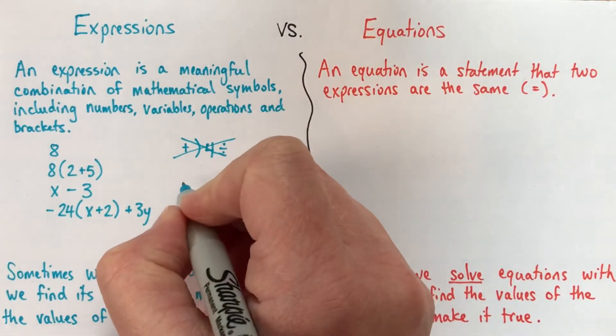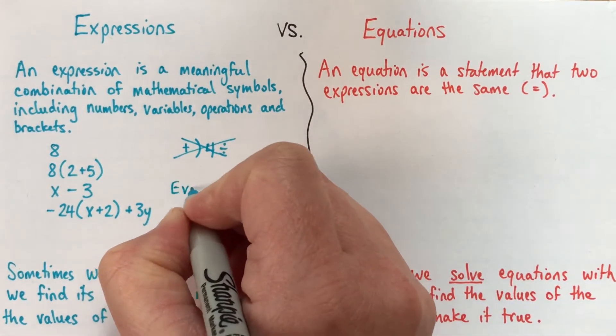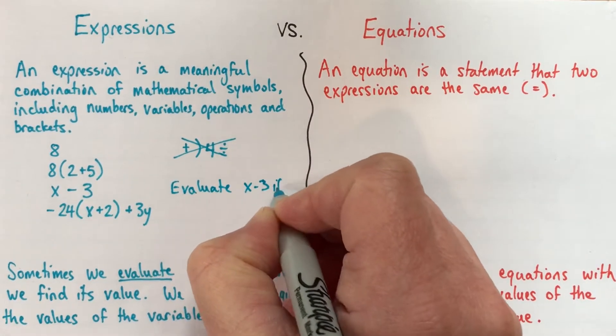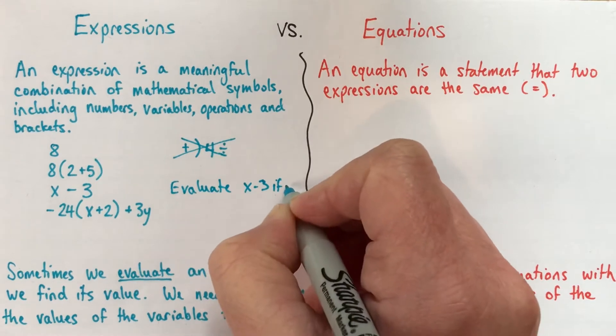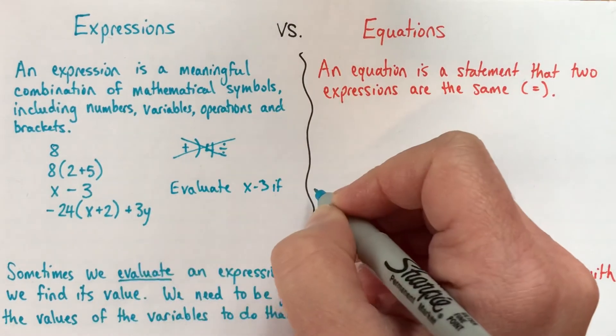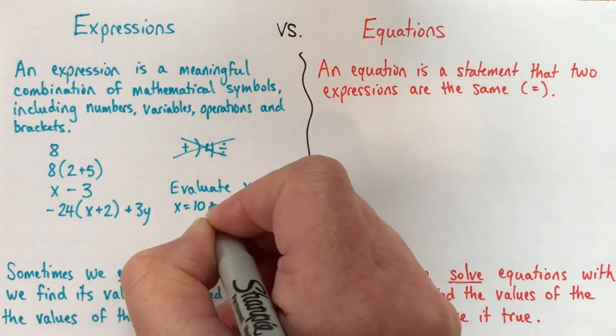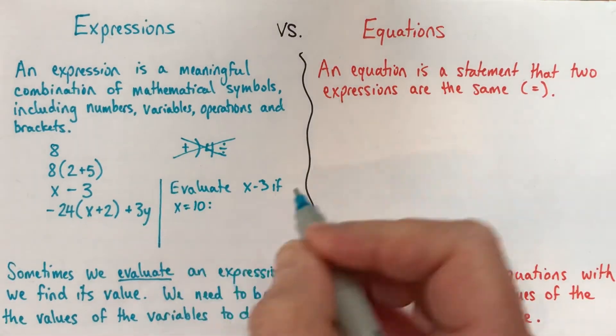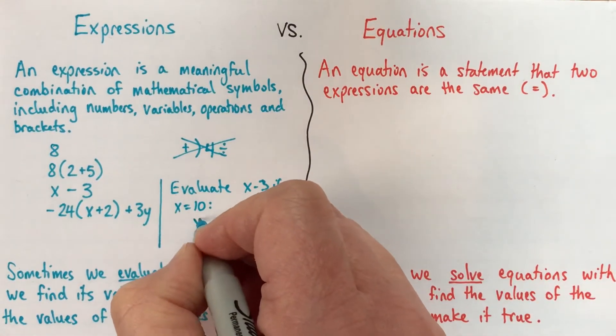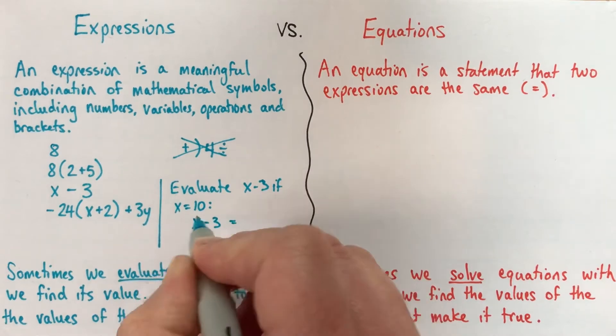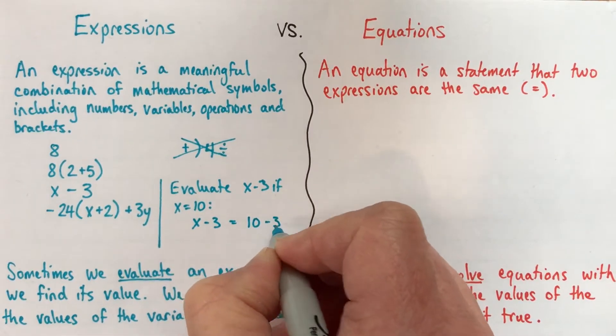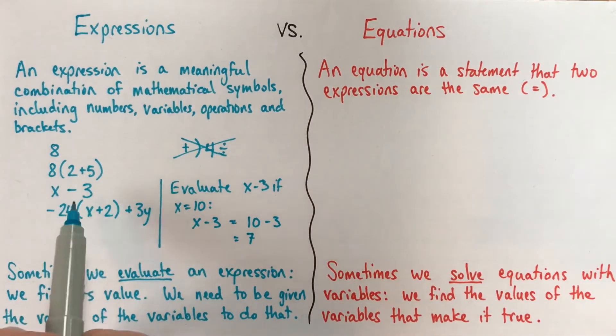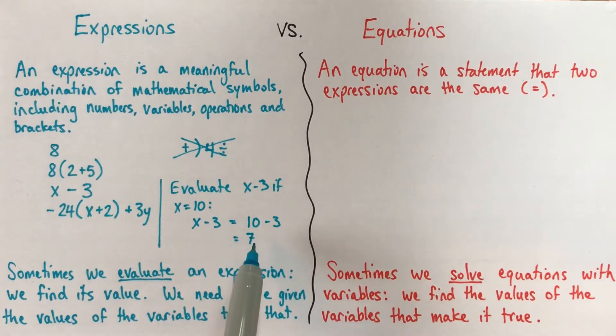So I'll do just a little quick example. We could evaluate that one, x subtract 3, if x is equal to 10. So we need to be told that x is equal to 10, and if we do that, then it's no trouble. x subtract 3, we're going to replace our x with 10, and 10 subtract 3 is 7. So if someone gives us the value for the variables, we can do all the calculations and find the value for the expression.